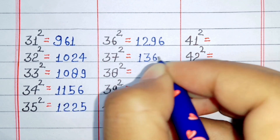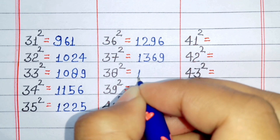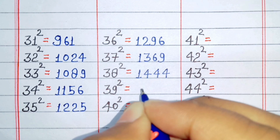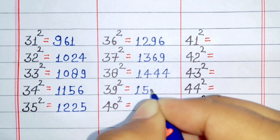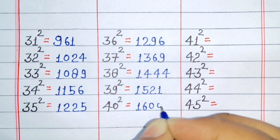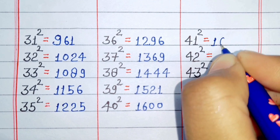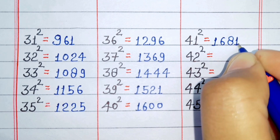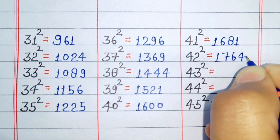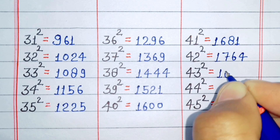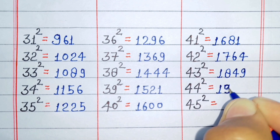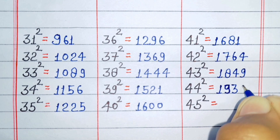Square of 37 is 1369. Square of 38 is 1444. Square of 39 is 1529. Square of 41 is 1631. Square of 42 is 1764. Square of 43 is 1849. Square of 44 is 1936.